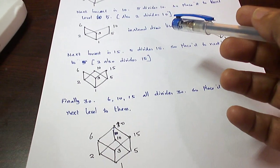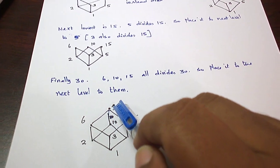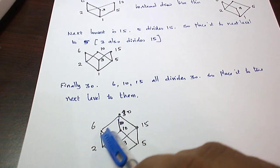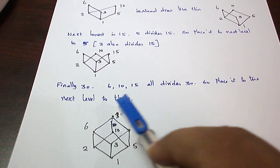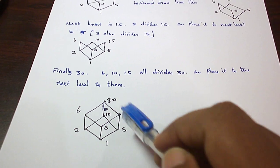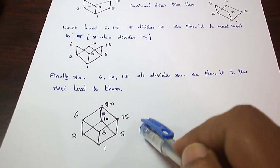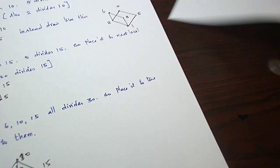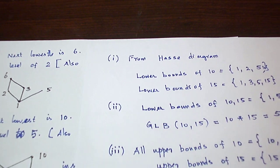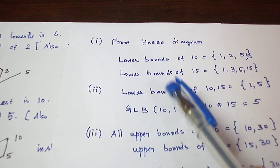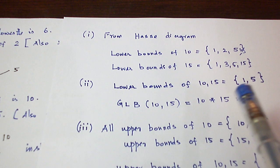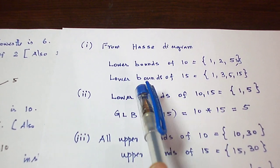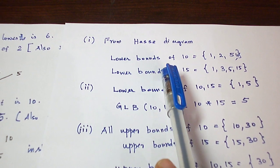Finally, 6, 10, 15 all divide 30, so there is the next level for them. 6 divides 30, 10 divides 30, 15 divides 30. So we have a cube-like Hasse diagram, and let us keep this Hasse diagram with us and answer the remaining questions.